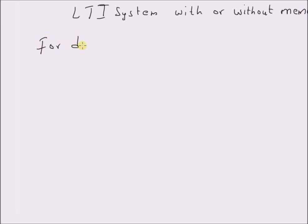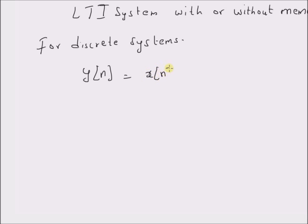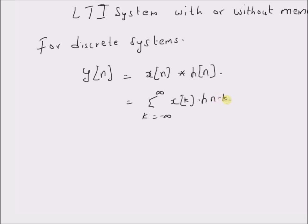For discrete systems, we know that the output y of n is given by the convolution of the input x of n with the impulse response h of n, which is basically equal to the sum k equal to minus infinity to plus infinity of x of k multiplied by h of n minus k. So y of n is basically a linear combination of the input x of k.